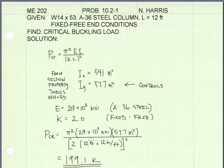Now substituting in all of the values for the variables in the equation, we get a critical buckling load of 199.1 kips. And we're done.